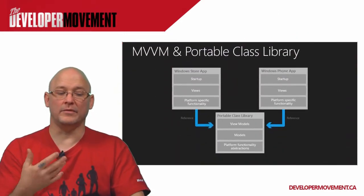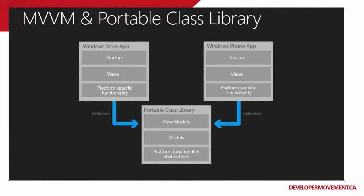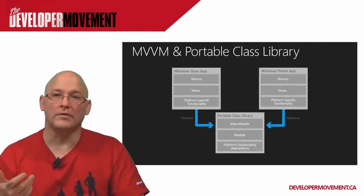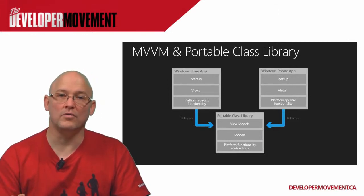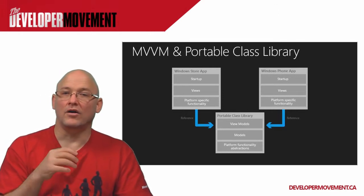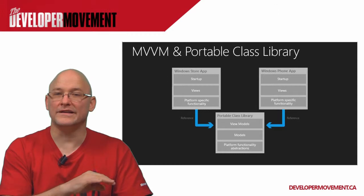When looking at MVVM in a portable class library, in your Windows Store app you have your startup initialization — your app.xaml.cs and app.xaml — containing your shared elements, your views, and platform-specific functionality. The only extensions you really need for each individual platform are the ones that target that specific platform. For example, speech isn't available in Windows 8, so you'd need to add additional classes in your Windows Phone version to enable those features.